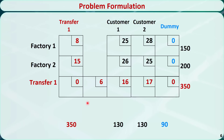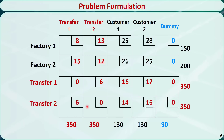For the second transfer center, we do the same: add a row and a column in the transportation tableau and set the supply and demand both equal to the total original supply, 350. This is the final tableau. We have converted a transshipment problem to a balanced transportation problem, and we can solve this problem using the transportation simplex method.